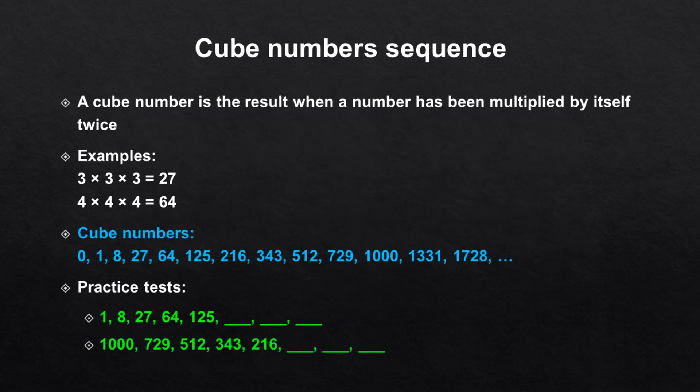Cube numbers sequence. A cube number is the result when a number has been multiplied by itself twice. For example, 27 is a cube number because if you multiply 3 by itself twice, you get 27. The same with 64 — if you multiply 4 by itself twice, you get 64. Here you can see a list with the first cube numbers. These practice tests are examples of number series tests with cube numbers.